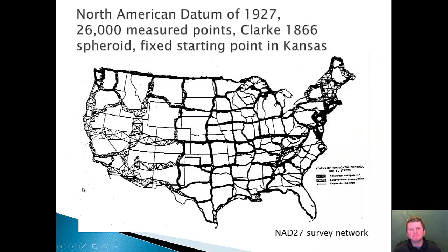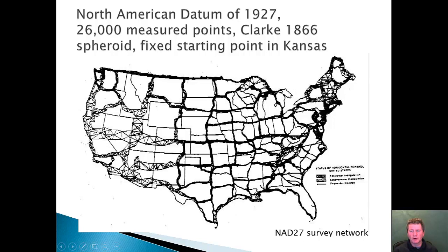In 1927, it took 26,000 measured points, utilizing the spheroid of Clark in 1866, and the starting point was in Kansas — the survey extended from there. You can see from the shape of the survey that there's an interest in populated areas, and in the border of the United States. The density was quite high in the area around Washington, D.C.